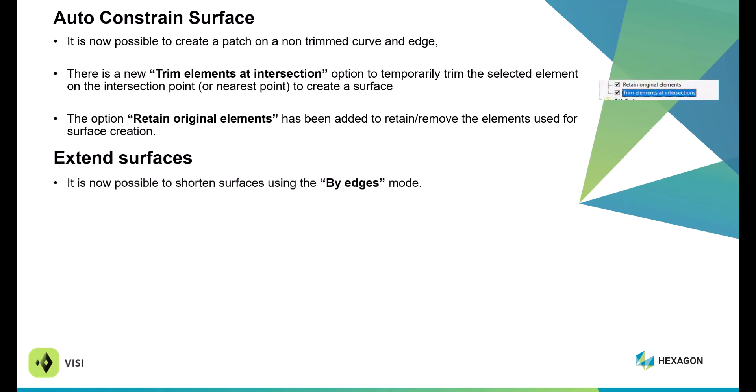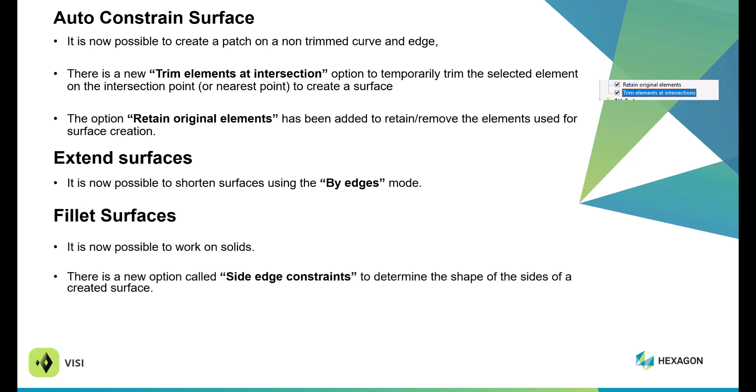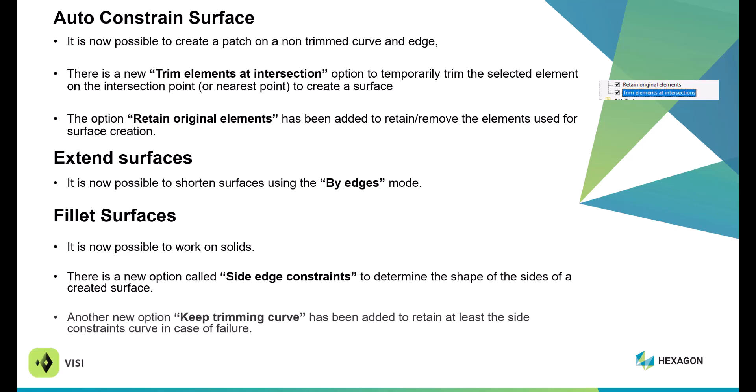Within Extend Surface, it is now possible to do an extension by a shortened surface by edges. Within Fillet Surface, it is now possible to work on a solid, and you can also select side edge constraints to determine the shape of the sides of a created surface. Another new option is Keep Trimming Curves, which allows you to create or retain trimming curves on either side in case of failures.